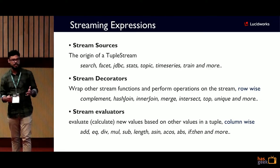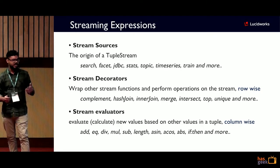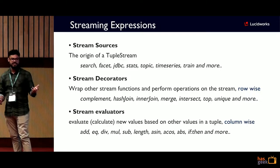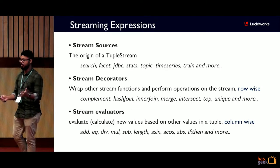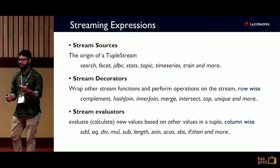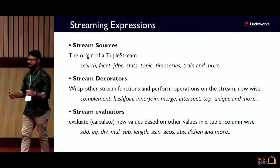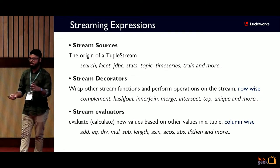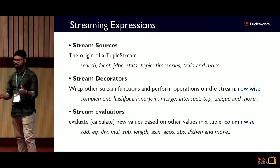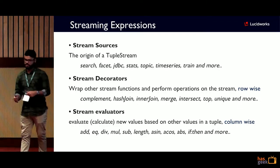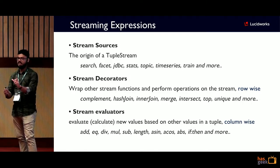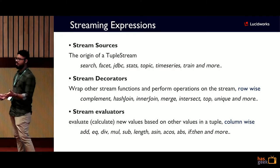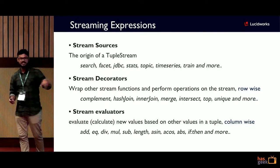Expressions can be divided into categories. Stream sources are the origin of tuple streams — search and facet streams fetch data from a SolrCloud collection, JDBC pulls from relational databases, and stats, topics, time series, and strain can pull from machine learning models. Stream decorators wrap around sources performing aggregations and operations row-wise — merging result sets, inner joins, selecting top-N, or unique tuples. Stream evaluators add or calculate new field values column-wise, supporting mathematical operations like division, multiplication, summation, and conditional if-else-then statements.